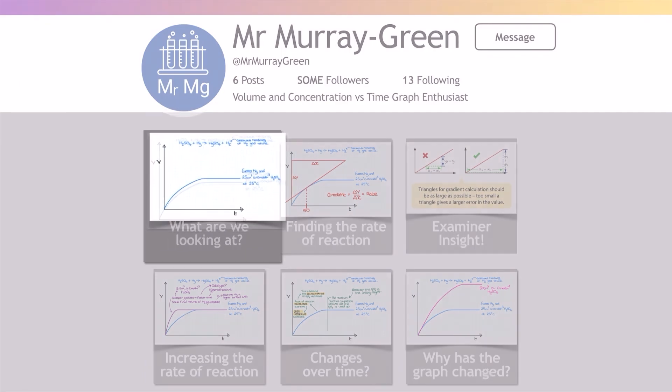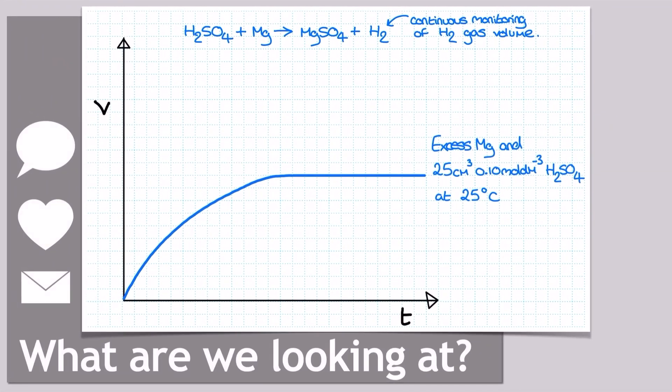So what are we looking at here? We have a reaction of excess magnesium with sulfuric acid to make a salt and some hydrogen gas. The hydrogen gas is being collected in a continuous monitoring style practical, and a graph has been plotted of volume of hydrogen gas collected versus time. I've deliberately left the axis labels off here because they are not my focus, and please note that the sulfuric acid is the limiting reagent, because we're going to come back to that later.